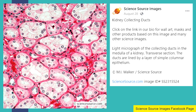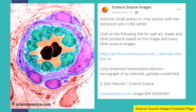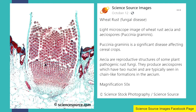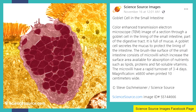Most of these slides are from ScienceSource Images, a Facebook page with lots of interesting and beautiful specimen images taken under different types of microscopes — I'll provide their link in the description below. Shown here are kidney collecting ducts, a small artery in cross-section, wheat rust — a fungal disease — using a light microscope with dyes, and goblet cells in the small intestine. The microscope used for those last cells is a color-enhanced transmission electron microscope.